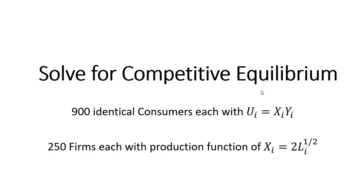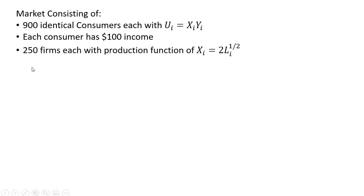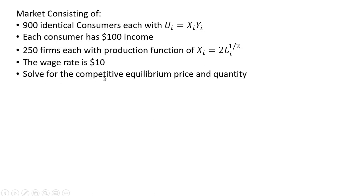In this video, we're going to solve for the competitive equilibrium based on 900 identical consumers in the market, each with the following utility function, and 250 firms in the market, each with the following production function. This market consists of 900 identical consumers with each having the following utility function, and each consumer is going to have $100 of income. As for firms, there are 250 firms, each with the following production function, and the wage rate is $10.